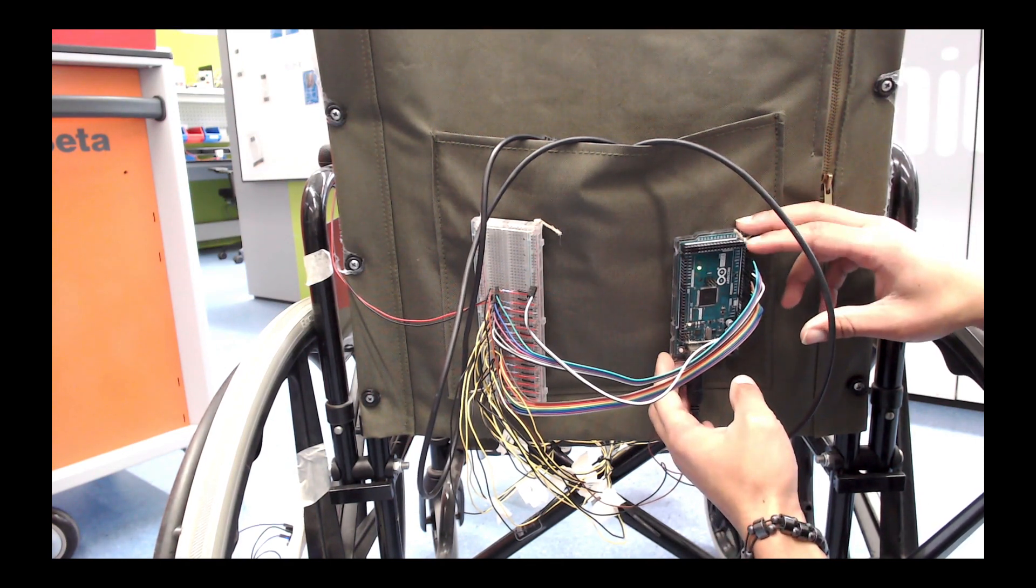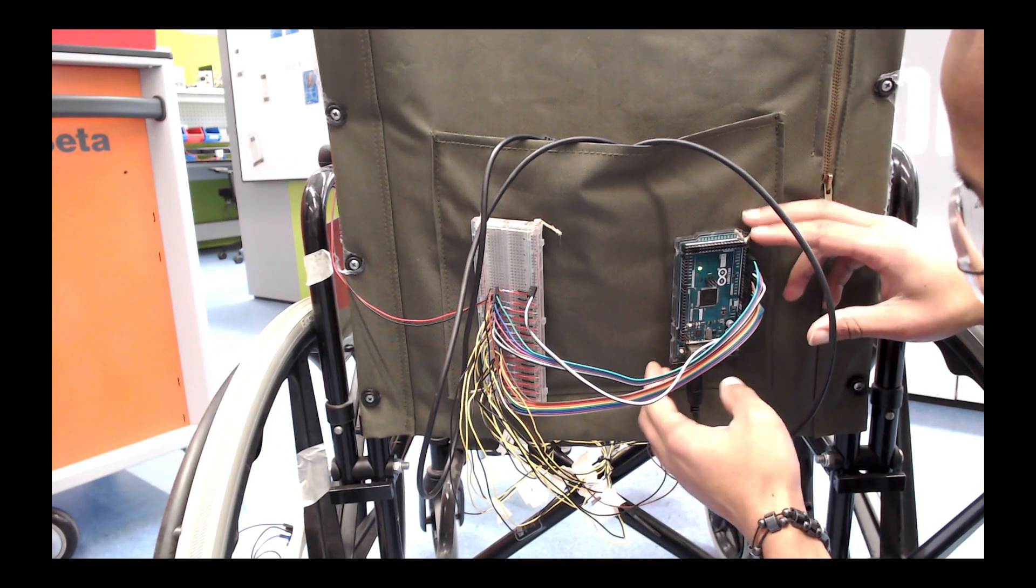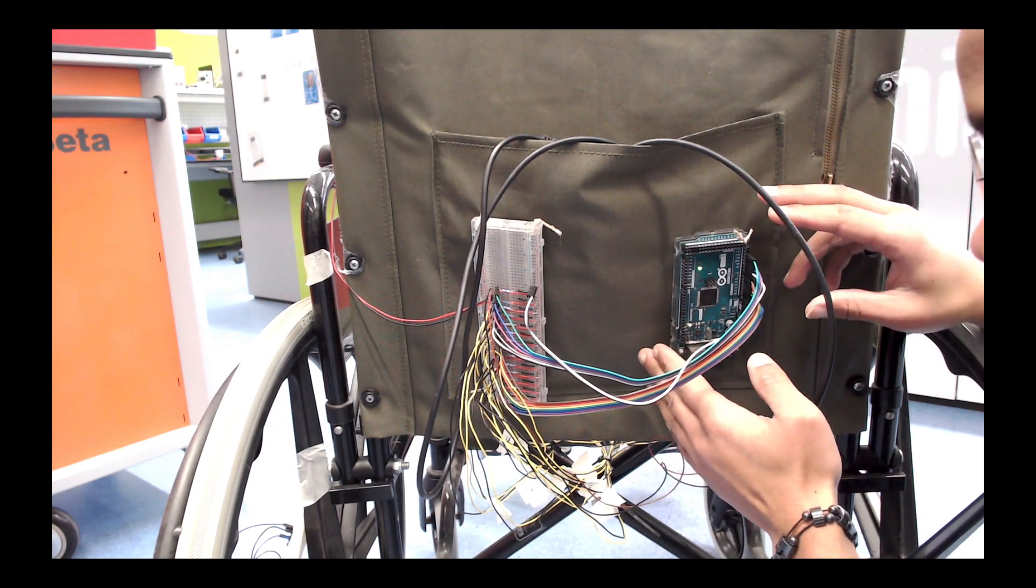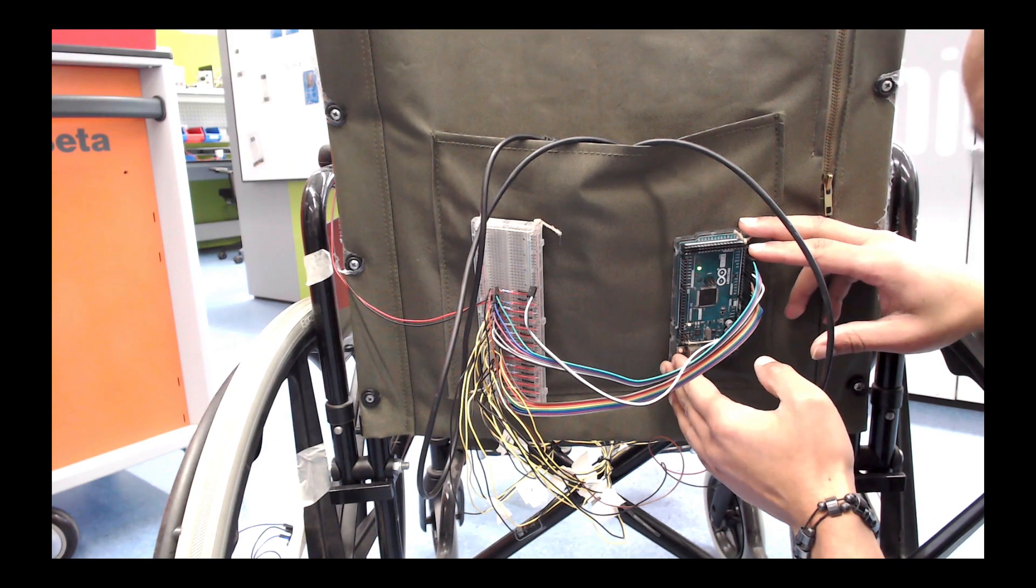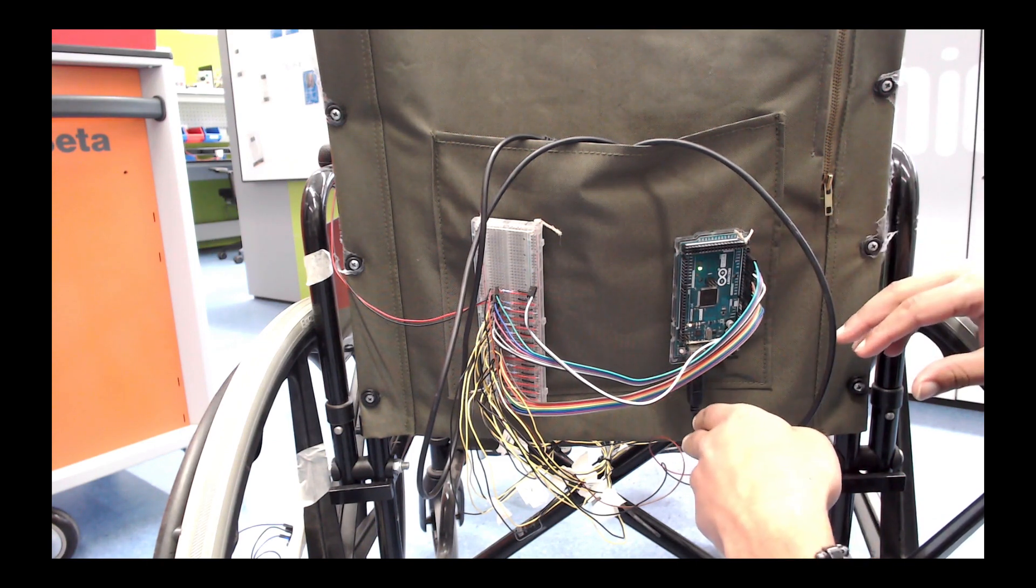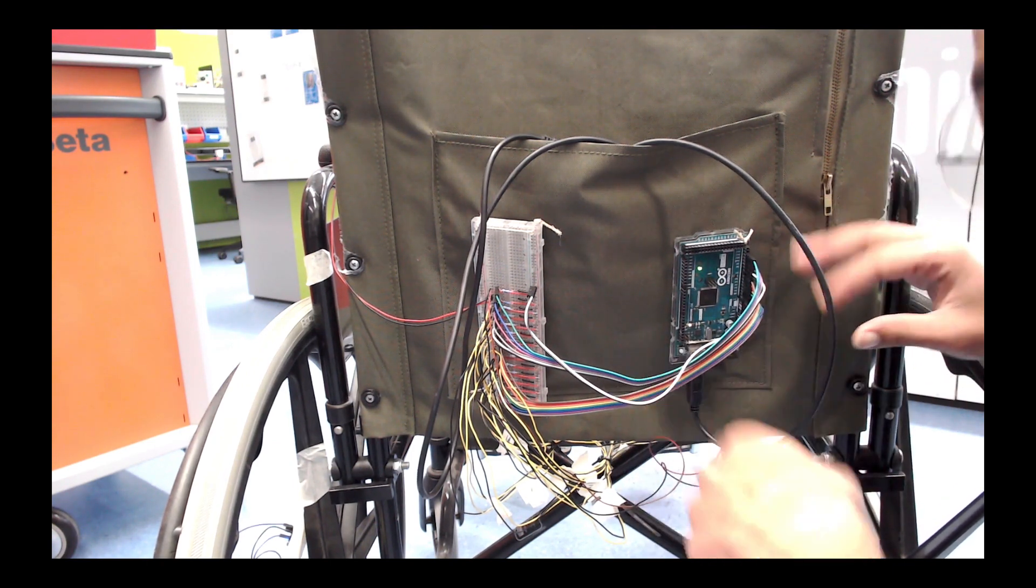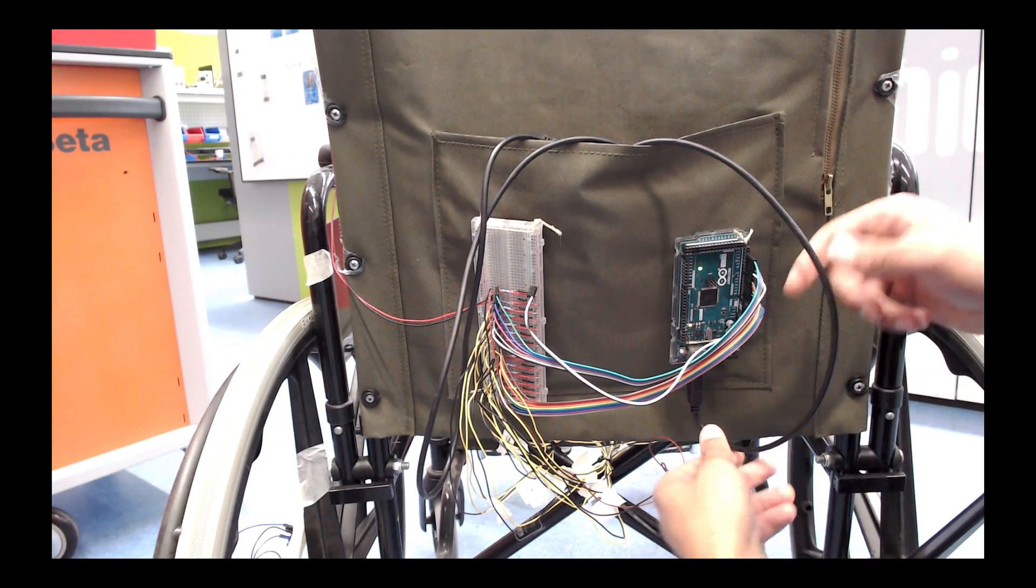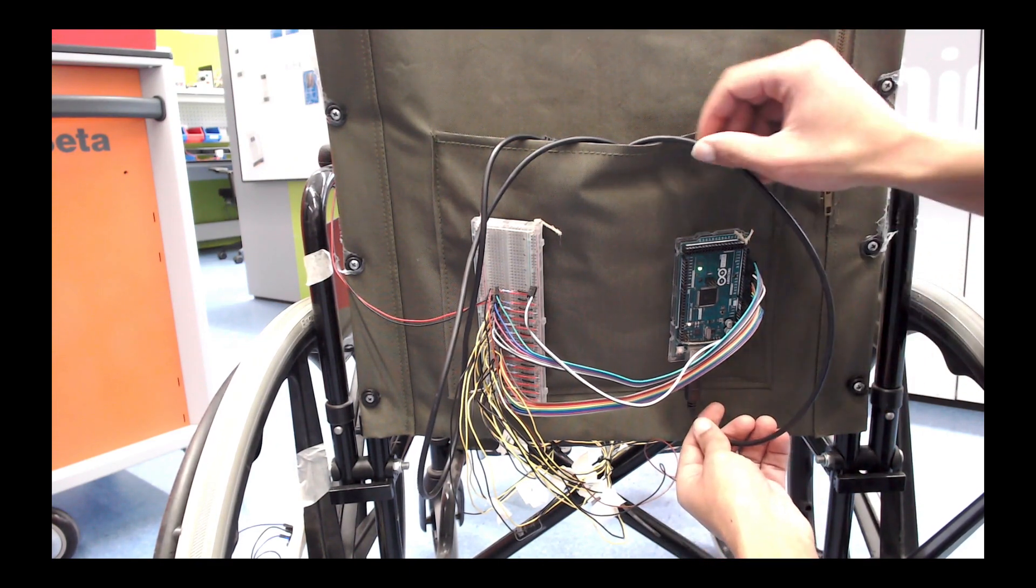And this is our Arduino. You might have seen it before. It's a simple chip that will get this data, parse it, that is to convert it into a form that we want to send it to another device or visualization, and then sends this through one of our first connections, which is USB.